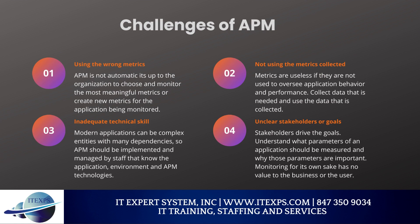APM can also place demands on stakeholders and pose challenges for the business. First, using the wrong metrics — APM is not automatic; it's up to the organization to choose and monitor the most meaningful metrics or create new metrics for the application being monitored. Second, not using the metrics collected — metrics are useless if they are not used to oversee application behavior and performance. Third, inadequate technical skill — modern applications can be complex entities with many dependencies, so APM should be implemented and managed by staff that know the application, environment, and APM technologies.